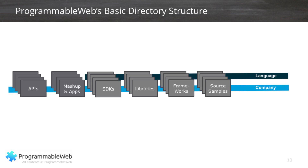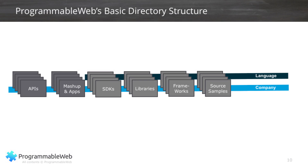Programmable Web tracks the API economy very closely. Here's some basic structure behind our directories. We track APIs on the far left, but we also track applications and something called a mashup — these are the types of apps that consume APIs. We have a separate directory for SDKs, the software development kits that make it easier for developers to consume APIs. And other tooling like libraries and frameworks. We even have sample source code so you can see, for example, how to consume the Twitter API using Python or JavaScript. We have an underlying taxonomy showing the languages supported and the companies that provide them — so you can get a slice of just those SDKs for JavaScript or just those APIs from Amazon.